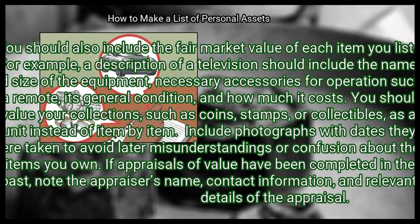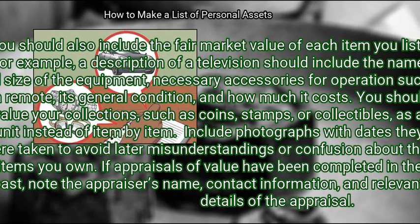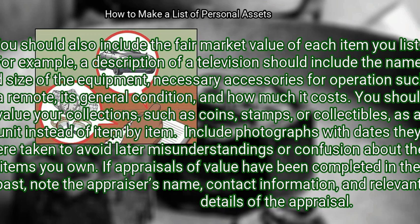You should also include the fair market value of each item you list. For example, a description of a television should include the name and size of the equipment, necessary accessories for operation such as a remote, its general condition, and how much it costs. You should value your collections, such as coins, stamps, or collectibles, as a unit instead of item by item. Include photographs with dates they were taken to avoid later misunderstandings. If appraisals of value have been completed in the past, note the appraiser's name, contact information, and relevant details of the appraisal.